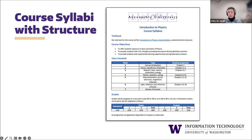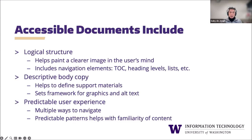What makes this information easier to consume? The answer is structure. On the previous slide, the text had no structure, and we were forced to interpret the information without any context. Structure provides that context to the user and makes the content easier to understand and follow. I'm going to show you techniques for doing that in both Word and Google documents. Many accessibility standards relate to content styling and layout, but for document accessibility, logical structure really helps paint a clearer picture in the user's mind — achieved by using navigation elements such as table of contents, heading levels, and lists.